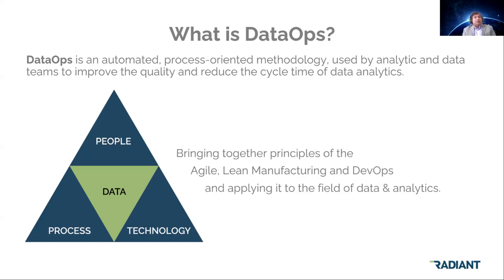In executive and senior leader conversations, everybody talks about how soon they have access to data. Very few conversations focus on the quality of data — nobody asks when can we have high-quality data. The key questions are: how soon can you make data available, and can you make it a repeatable process so we don't have to reinvent the wheel? These three things — people, process, and technology — are why DataOps exists.